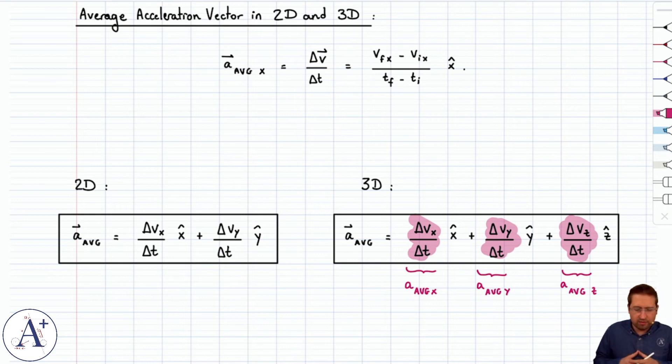So that's the case for the average acceleration vector. It generalizes just like any vector. You add as many components as you need, either another one for 2D or two extra components for 3D, and you get these two forms that we just derived.